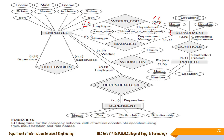Minimum value 1 indicates total participation for both sides — all employee entities must be related with department entities. For the MANAGES relationship, the employee side is (0,1): 0 means an employee may be a manager or may not — partial participation — and maximum 1 means at most one manager role. The department side is (1,1): minimum 1 means a manager is compulsory for a department, and maximum 1 means only one manager per department — total participation.